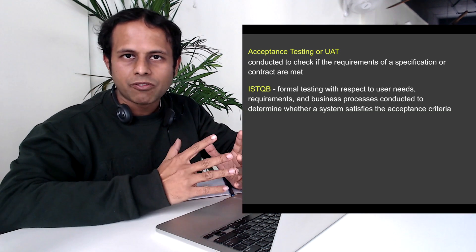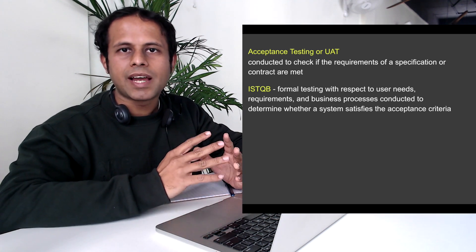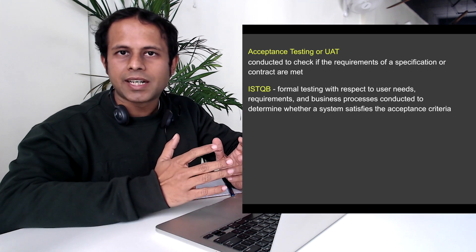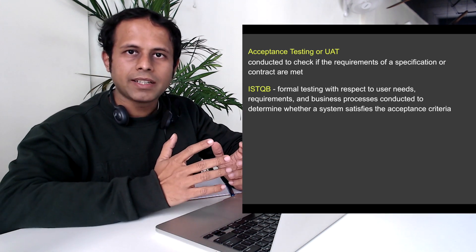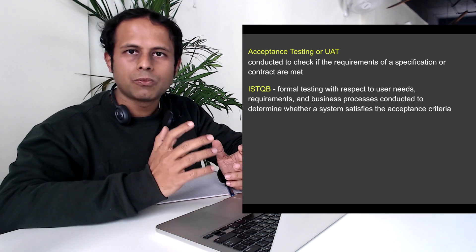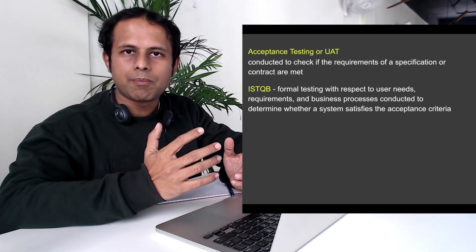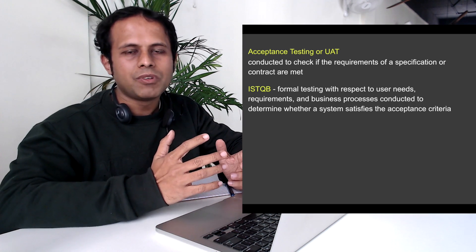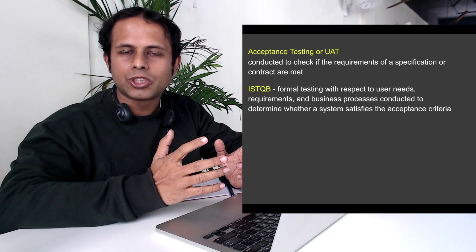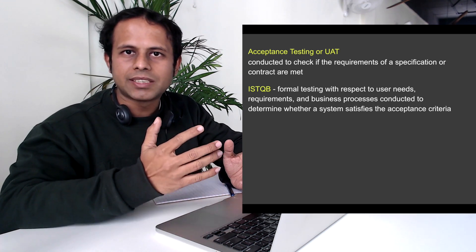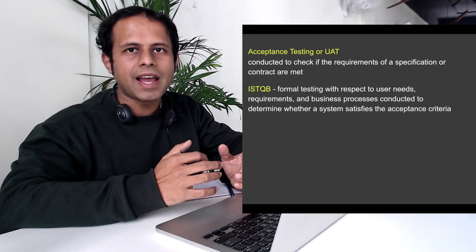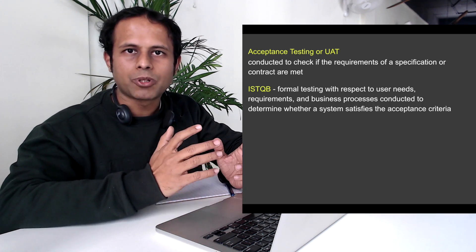ISTQB defines acceptance testing as formal testing conducted with respect to the user needs, the requirements, and the business processes, to determine that the system meets the acceptance criteria. When we start building a product or application, or making any changes, we have some acceptance criteria defining what the application should do. Before accepting the final product, it is checked if it satisfies all the acceptance criteria.